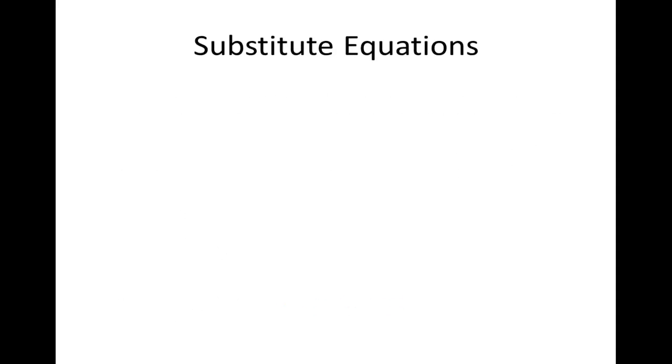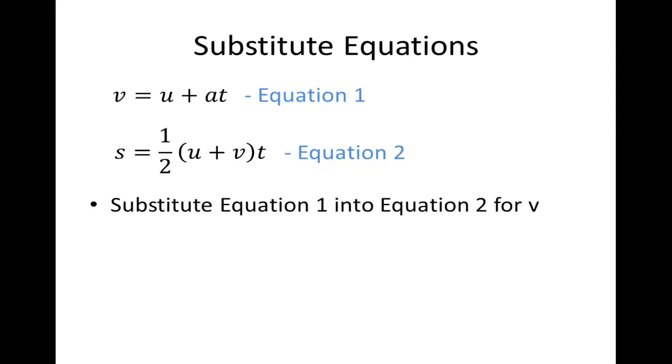Now, we can simply derive the three remaining equations of motion through substitution of our equations 1 and 2. Let's start off by substituting equation 1 into equation 2 for V, where V is equal to U plus AT. And what we get is S is equal to UT plus a half AT squared. Our third equation of motion, which I will call equation 3.